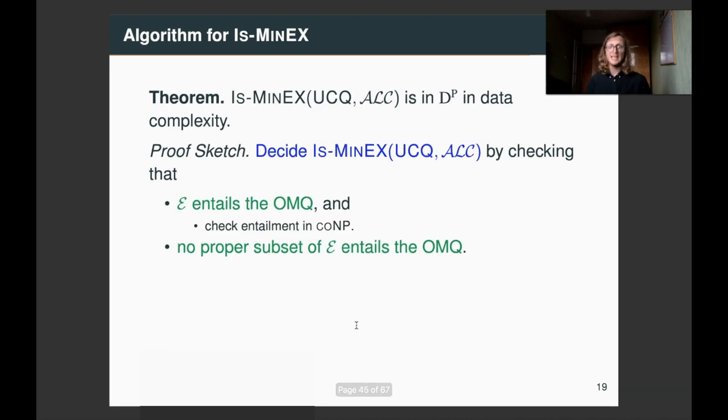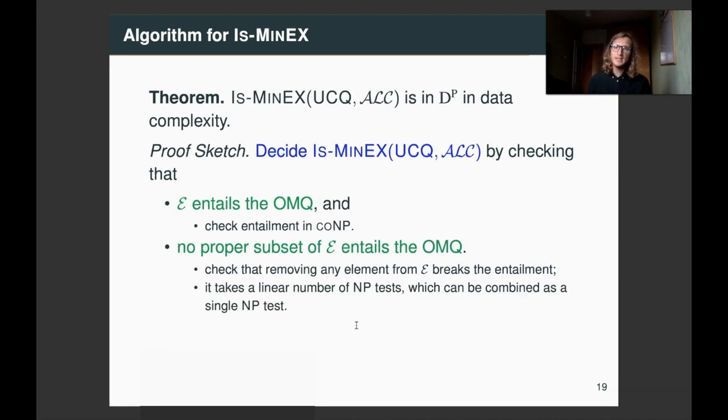So, we can check entailment in co-NP, and checking that no proper subset entails it is equivalent to checking that removing any element breaks the entailment. And this can be done with a linear number of NP tests, which can be combined as a single NP test. So, co-NP and NP test is in DP.